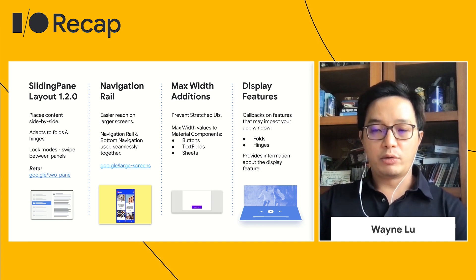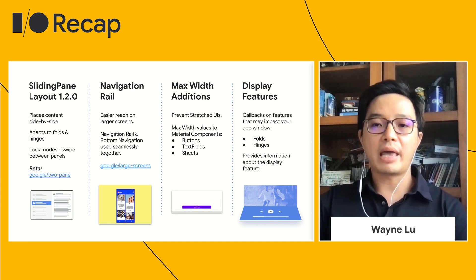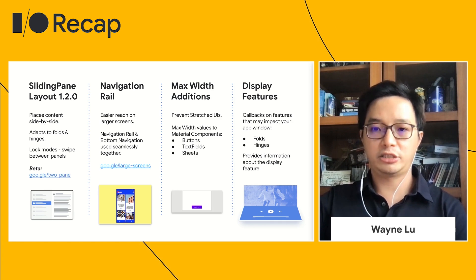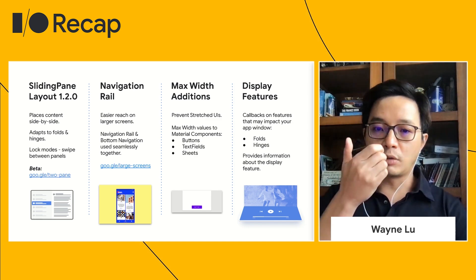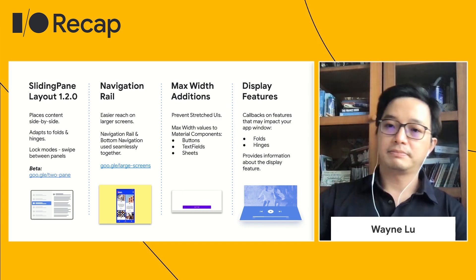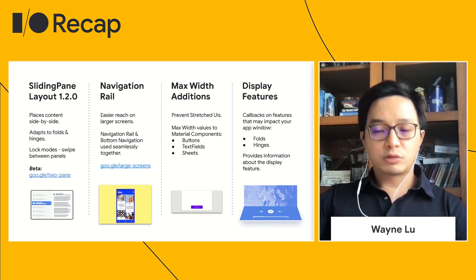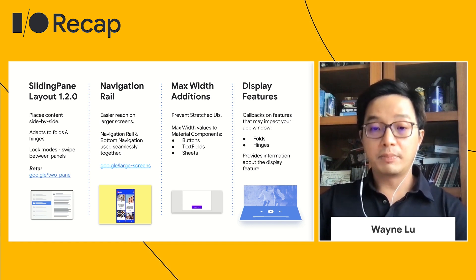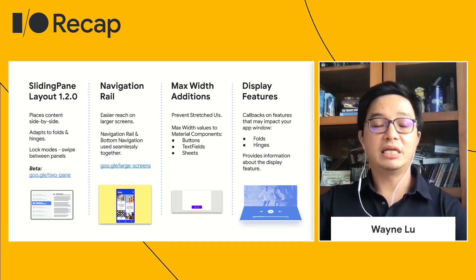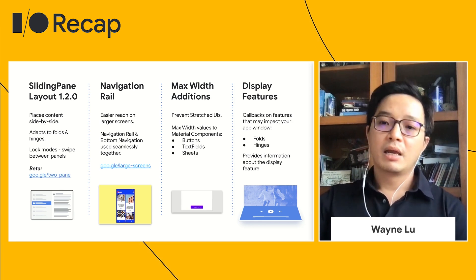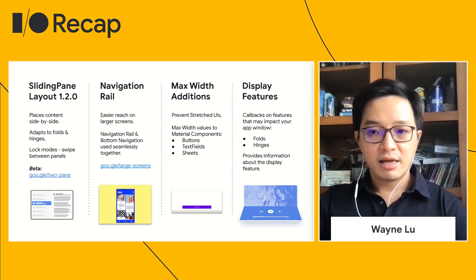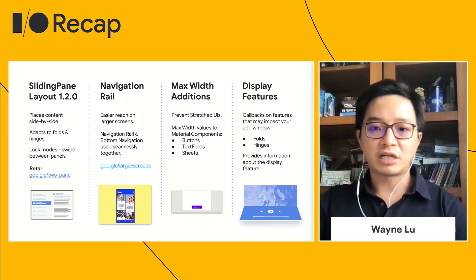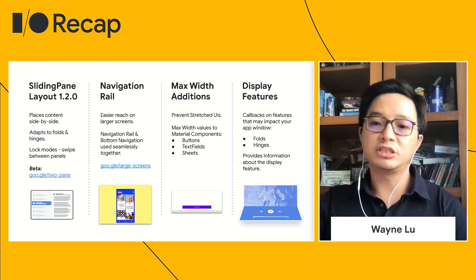Next, we have Navigation Rail. This allows you to create a more ergonomic experience across large screens. On a tablet, it supports better reachability. On the phone, users normally hold the phone from the bottom, and in apps where vertical scrolling is key, the bottom navigation decreases the amount of content easily available to users. To prevent the UI from being overstretched on large screens, we have added max-width additions to common material components such as buttons, text fields, and sheets.